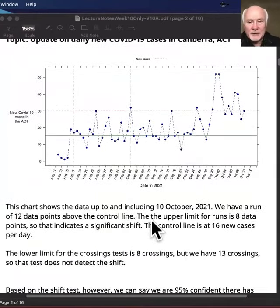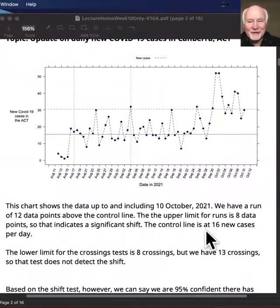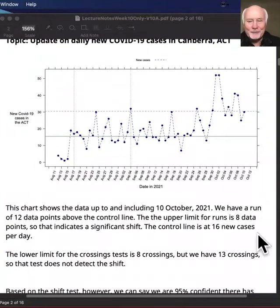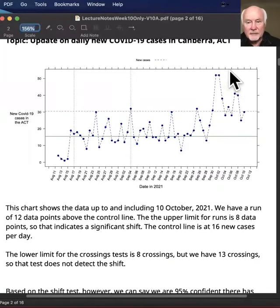Just quickly on the COVID situation, we're now definitely into a statistically significant upward shift in Canberra. So we've got a run of 12 data points there above the control line.